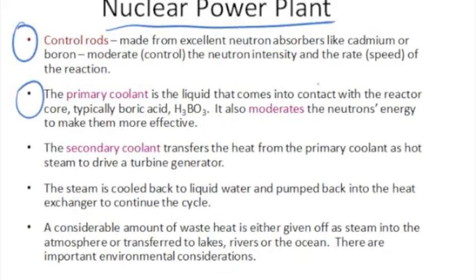The primary coolant, of course, is the liquid that comes actually in contact with the reactor. Boric acid is added in there because boron is a good neutron absorber. The secondary coolant then transfers the heat from the primary coolant as hot steam to drive the turbine. And then the steam is cooled back down to a liquid by going through this tertiary coolant system. So it's three loops of liquid to control the heat of the water.